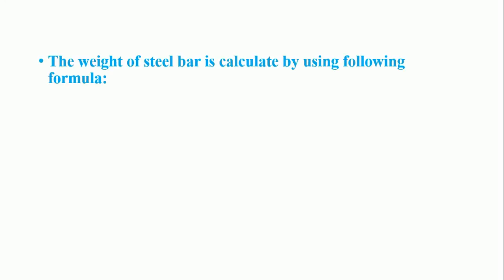Welcome to Civil Engineering in Nepal. Weight of steel bar. The weight of steel bar is calculated by using following formula, where W is called weight: W equals d squared by 162 kg per meter, where d is in mm.